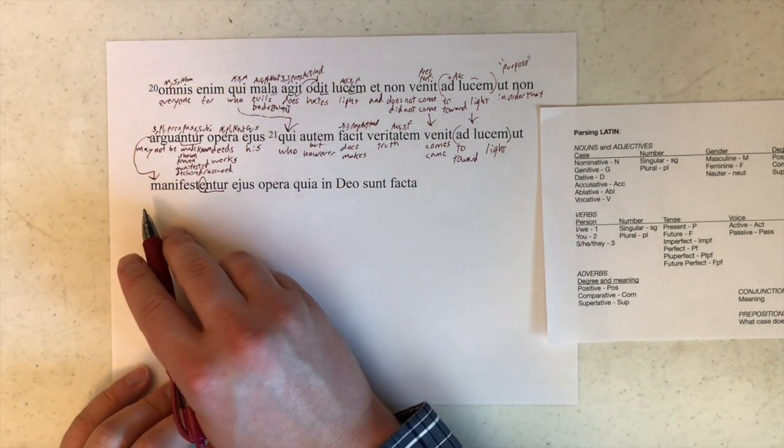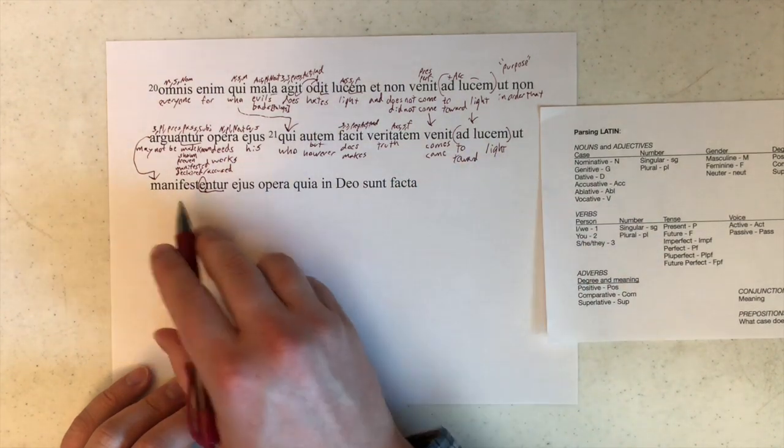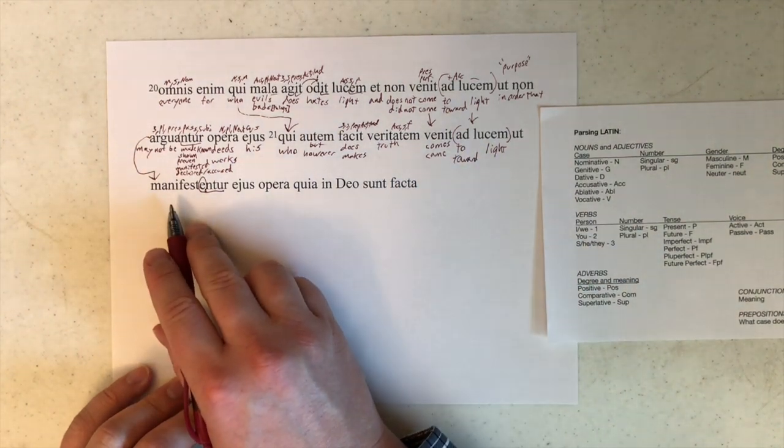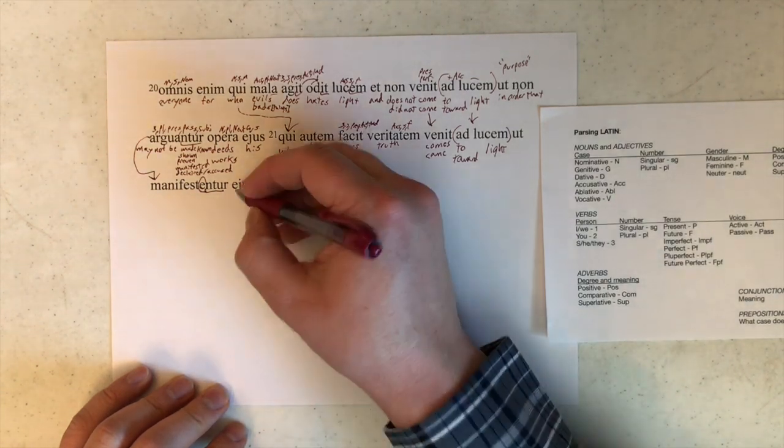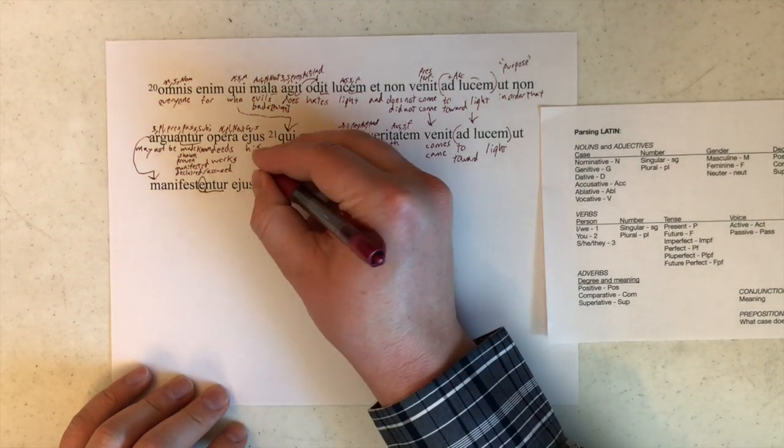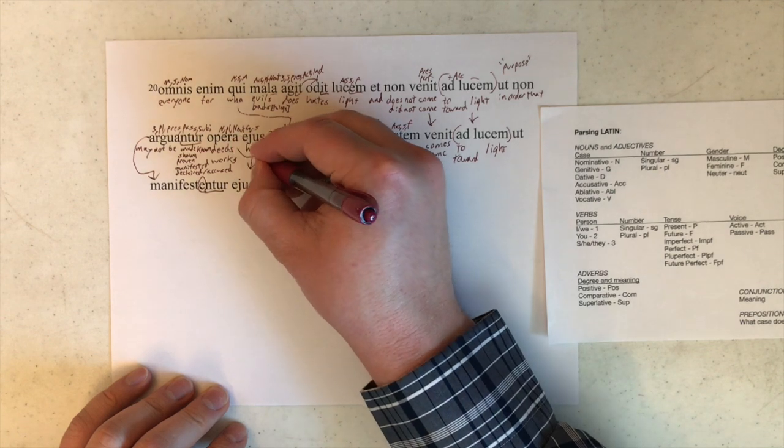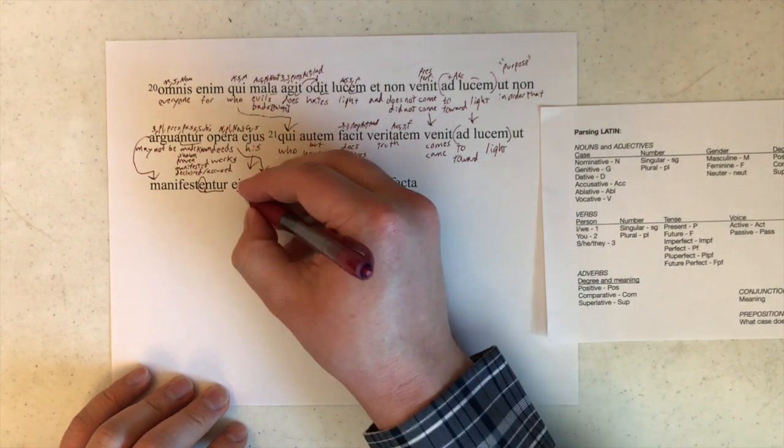Light and then may be in order that, or with the result that may be manifested. So we'll figure that out in a moment. Eius is genitive, singular, exactly like that one. Opera is the same as that one. No need to parse either of those.